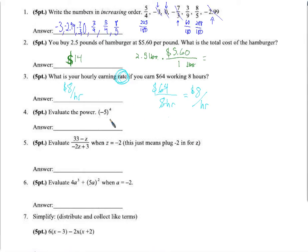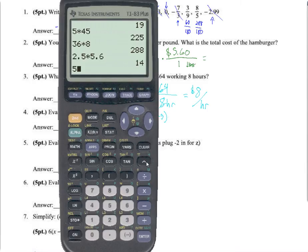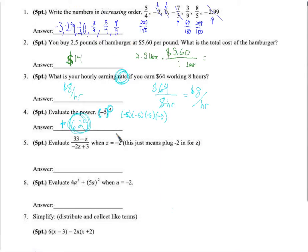Evaluate the power of negative 5 to the 4th — and we have parentheses here raised to a power. That means we multiply negative 5 by itself 4 times. Let's decide sign first: negative times negative is positive, times another negative times negative is also positive. So it's positive. Then 5 times 5 is 25, and 25 times 25 is 625. The answer is positive 625.